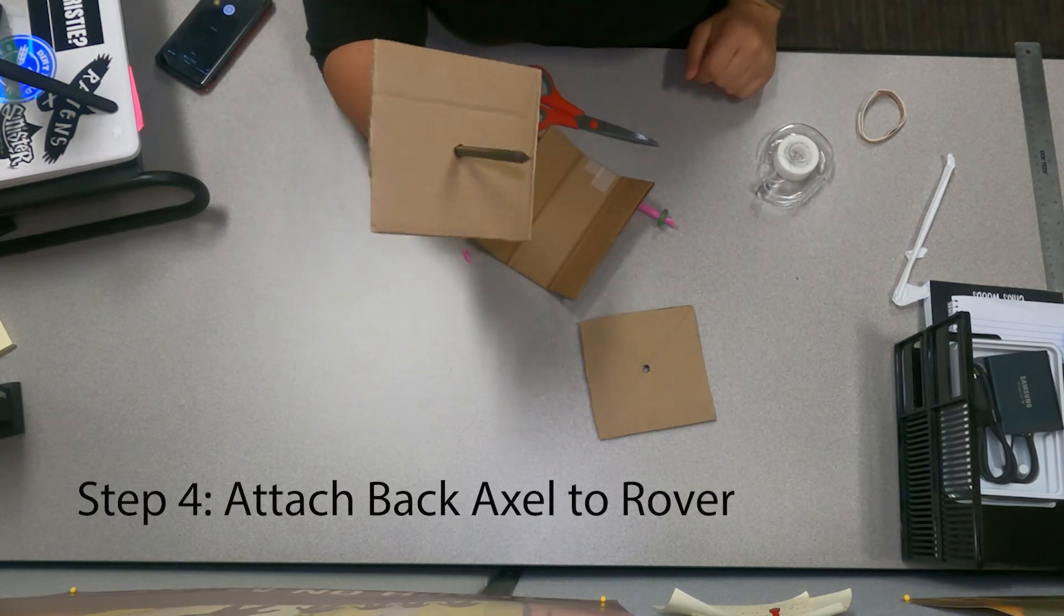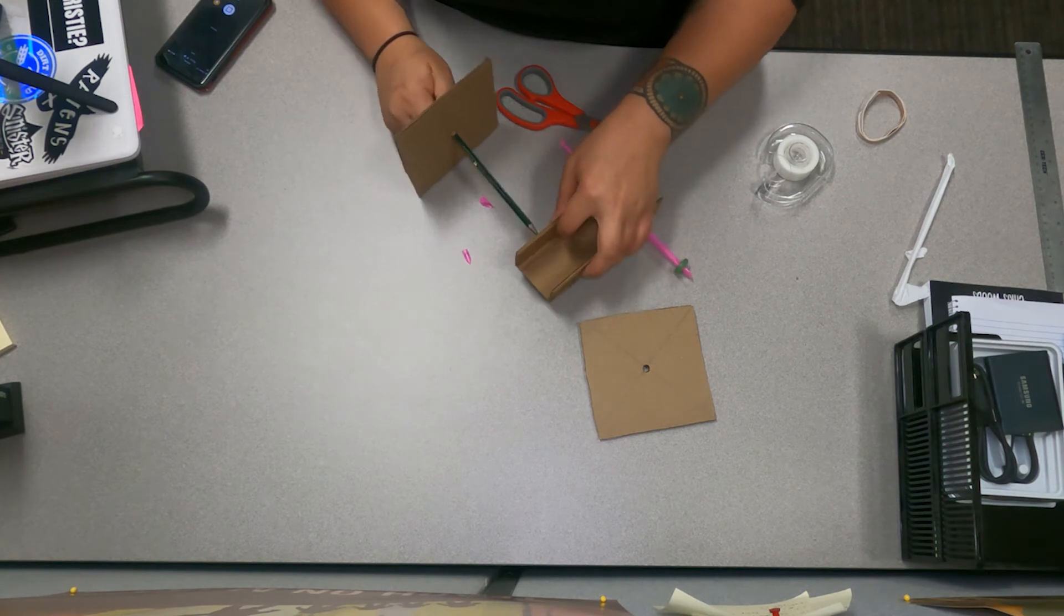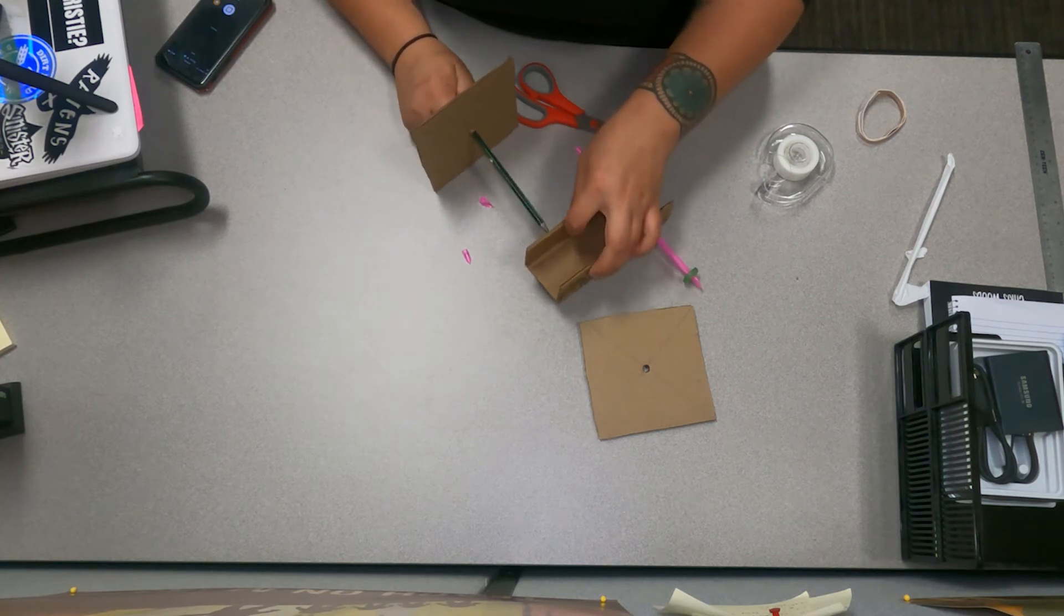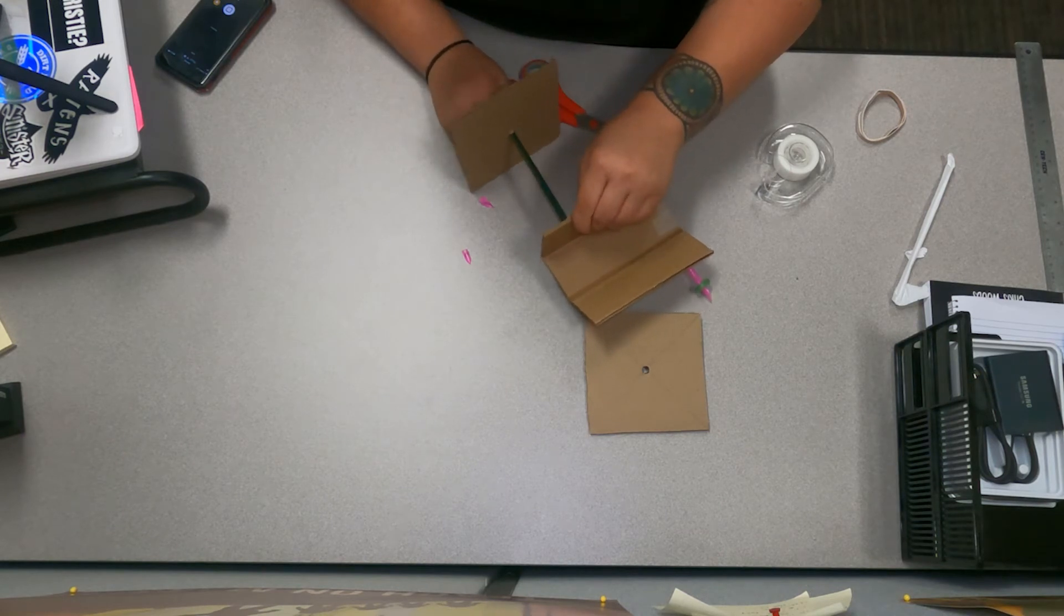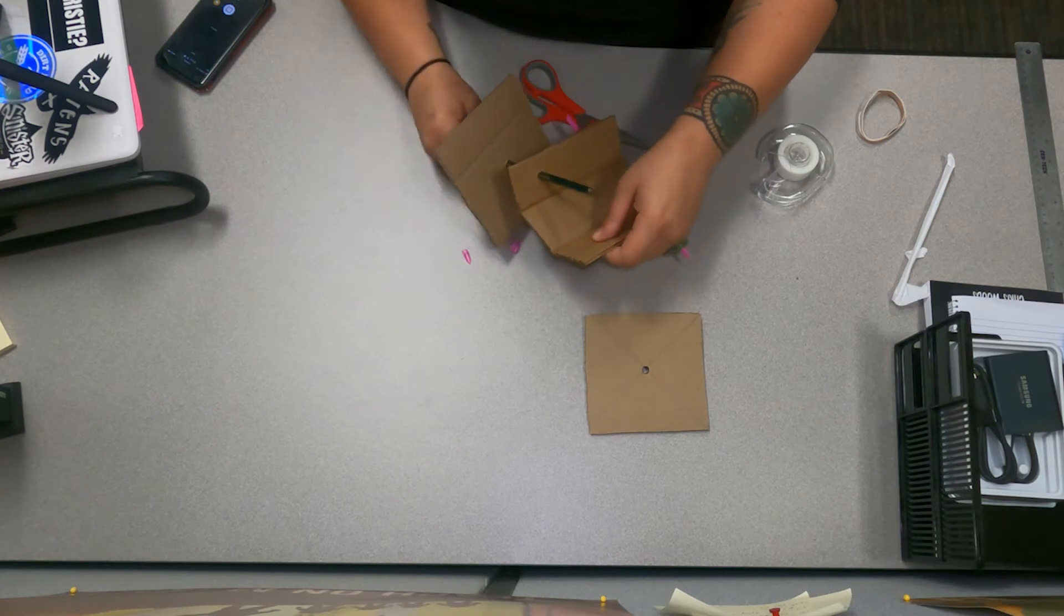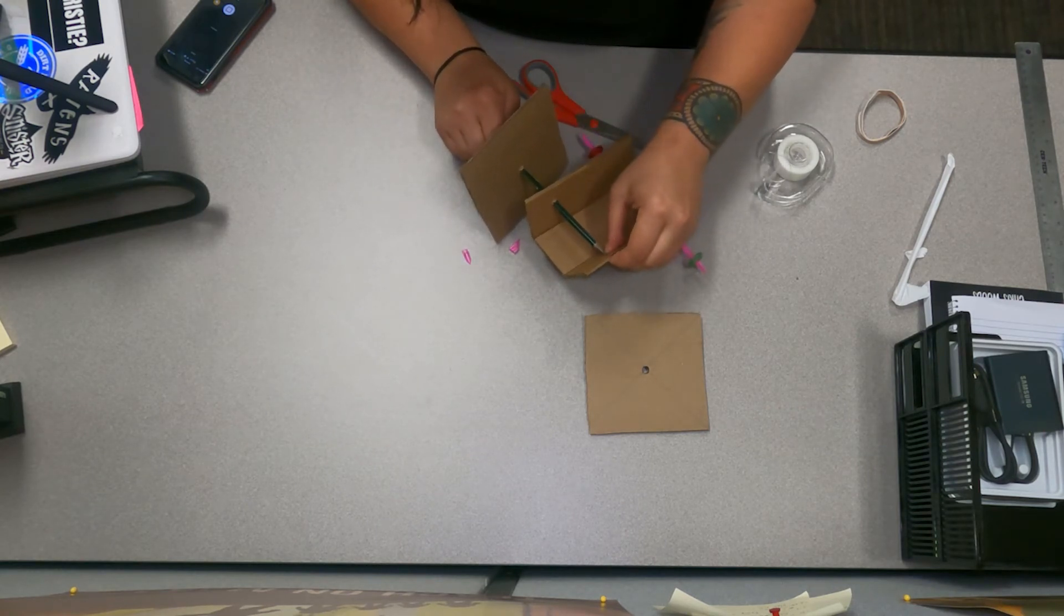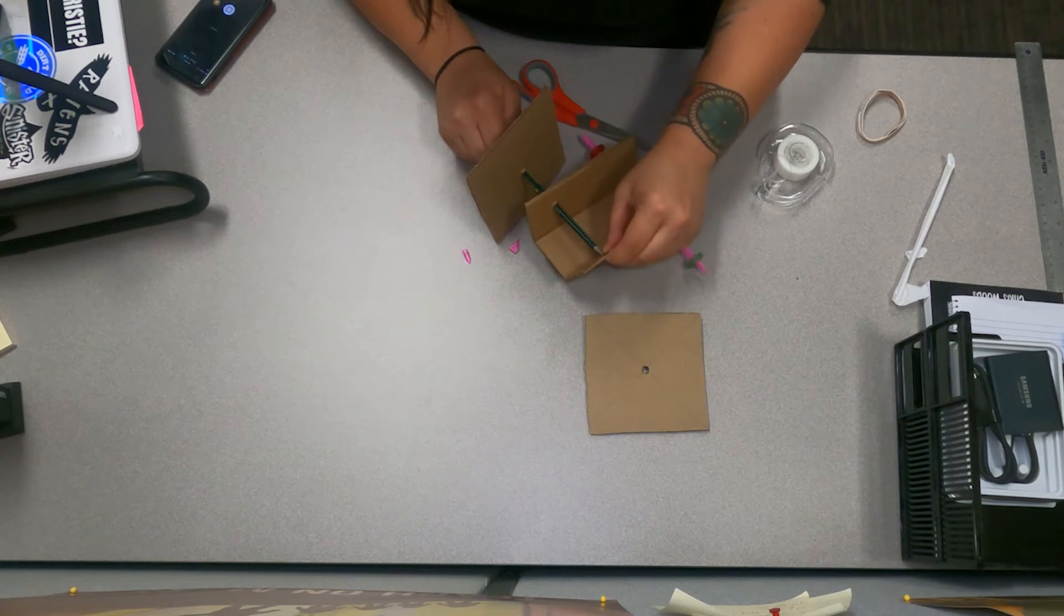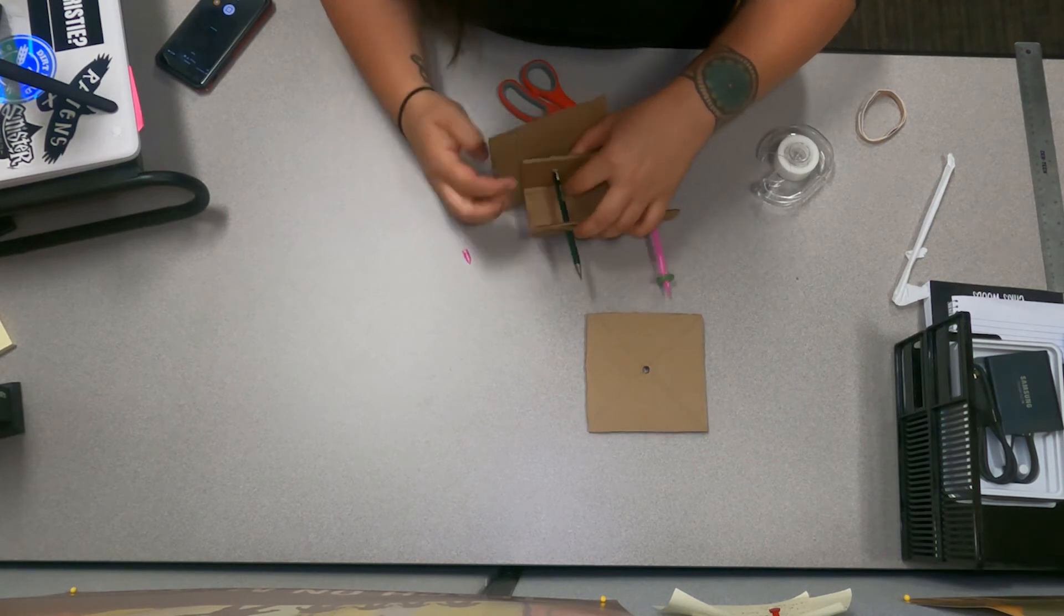Step four, I'm gonna attach the back axle to the rover. So you take that one back wheel off. With the sharp side of the pencil you're gonna do the same thing that you did to the wheels to the rover body. You're just gonna stab the pencil through the rover body on both sides. Careful not to hurt yourself.